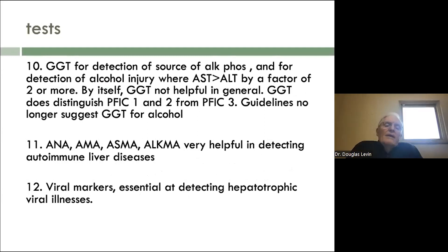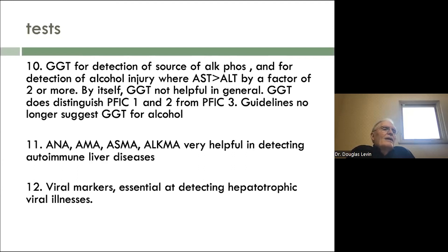The GGT is one of my least favorite tests. It was used by insurance companies to identify alcoholism, except it identifies far more false positives — generally it's elevated and it's not due to drinking. It is recommended as a way to check the source of the alkaline phosphatase, but I think it's often misleading and you'll make the wrong conclusion. It's also used to detect alcohol injury where AST is greater than ALT by a factor of two or more. But you have to be very careful, because just because the GGT is elevated, it doesn't necessarily mean that's the problem.